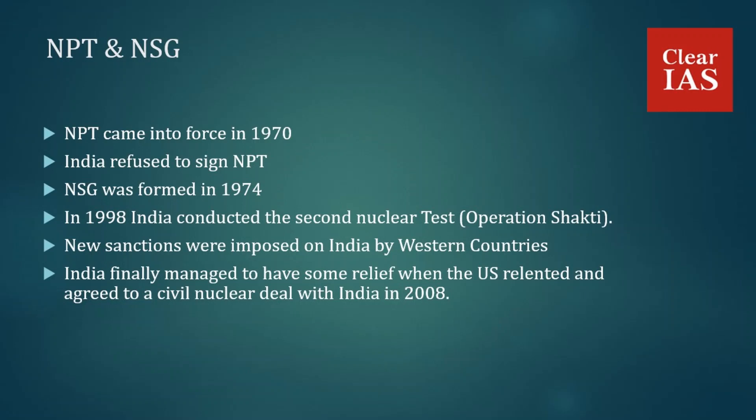The NPT, or Non-Proliferation Treaty, is an international treaty that came into force in 1970. Its main objective was to prevent the spread of nuclear weapons and weapons technology. Apart from India, Pakistan and Israel have also not signed the NPT. India refused to sign because the NPT defines nuclear weapon states as those that tested nuclear devices before 1967, which means India could never become a recognized nuclear weapon state.